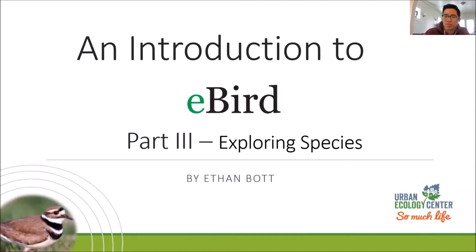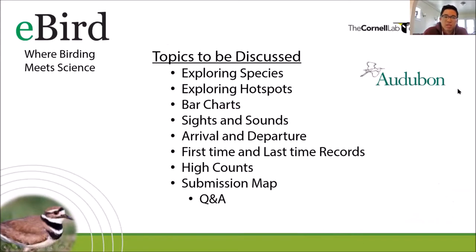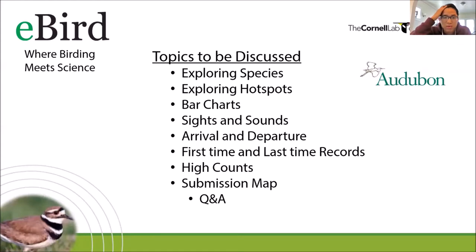Here's the brief outline of what I'm going to be talking about. We'll be exploring species and species maps - the difference between those two tools in eBird. We'll talk about exploring hotspots and how you can use hotspots to scout out your birding before you go. We'll look at the bar charts in eBird, and also the other tools like arrival and departure, first time and last time records, high counts, and the submission map. Then we'll end with any questions you have.